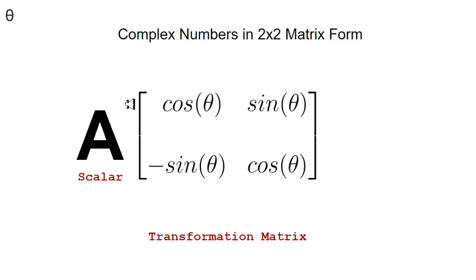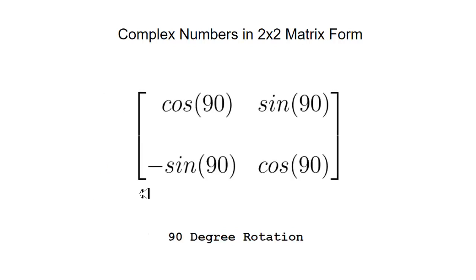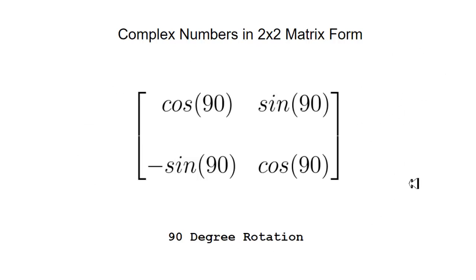If we set A equal to 1 and set theta equal to 90, this transformation matrix will take a point and transform it 90 degrees counterclockwise. It is generally used for transforming points about the origin in a Cartesian coordinate system — transforming an XY location through this transformation to end up with another point.